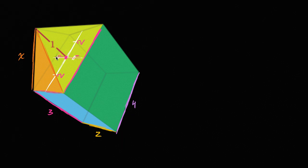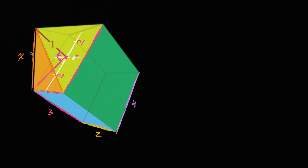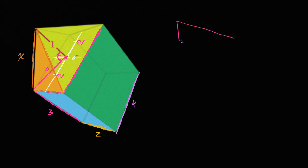How does that help us? Using that information, we should be able to figure out this length — let's call it length a. Why is this length interesting? If we know that length, it forms a right triangle. That length and the one are the two non-hypotenuse sides of a right triangle, and x would be the hypotenuse, so we could just apply the Pythagorean theorem. So if we can figure out a, we can figure out x. Let's look at it in two dimensions.